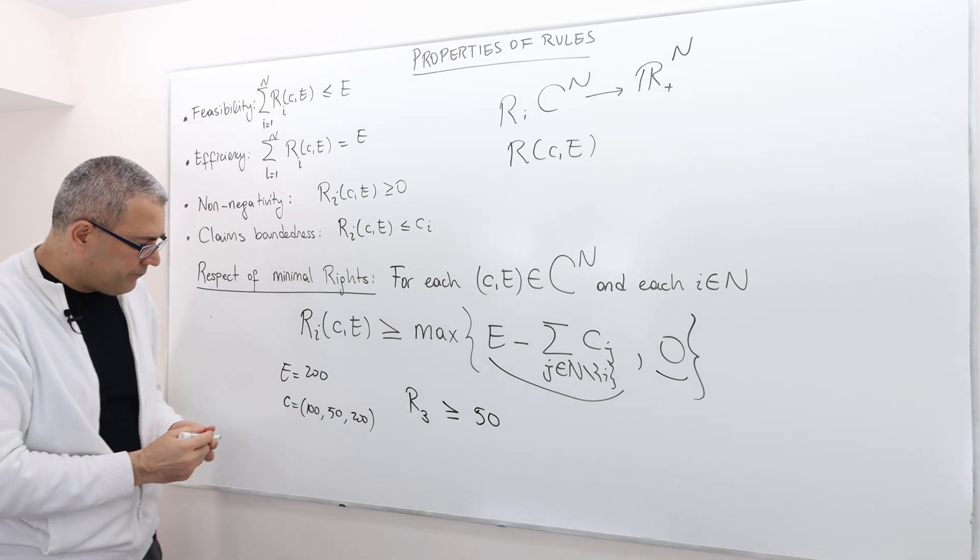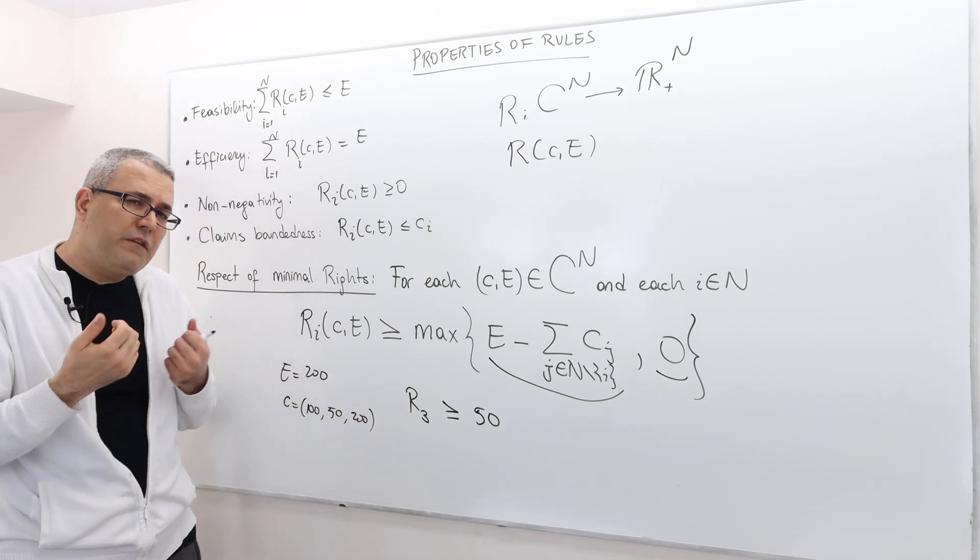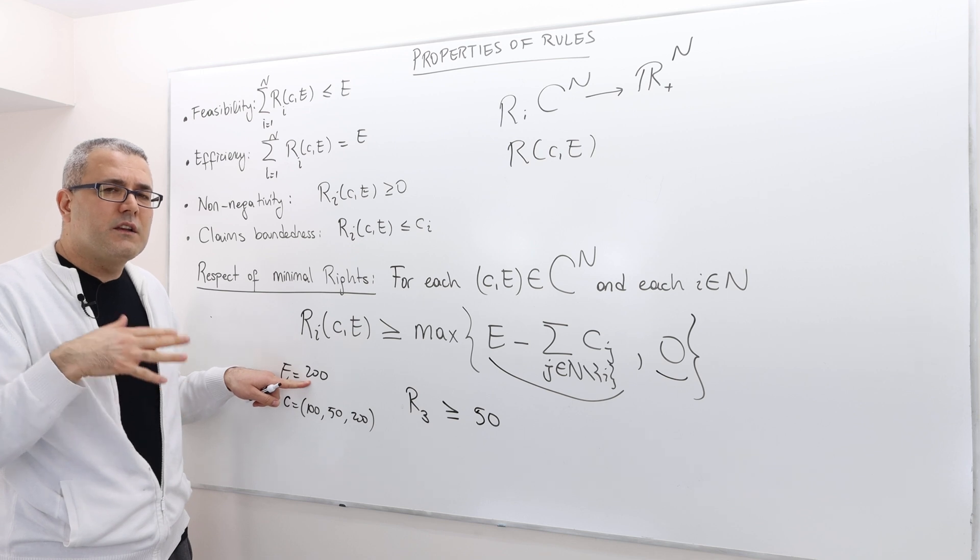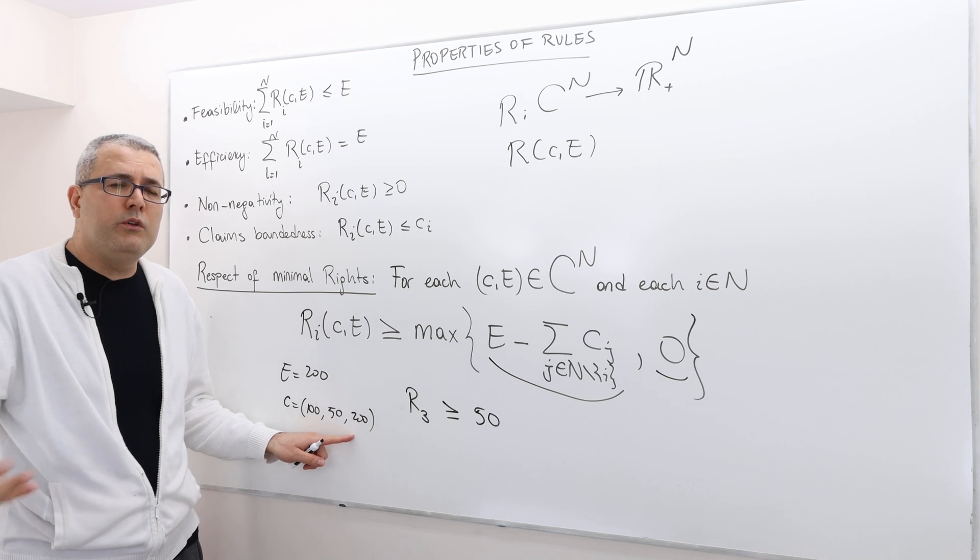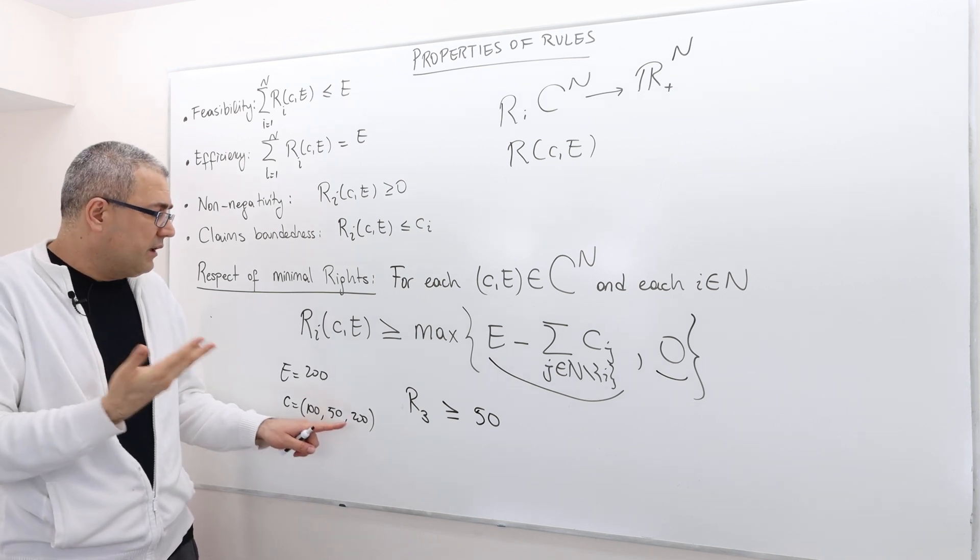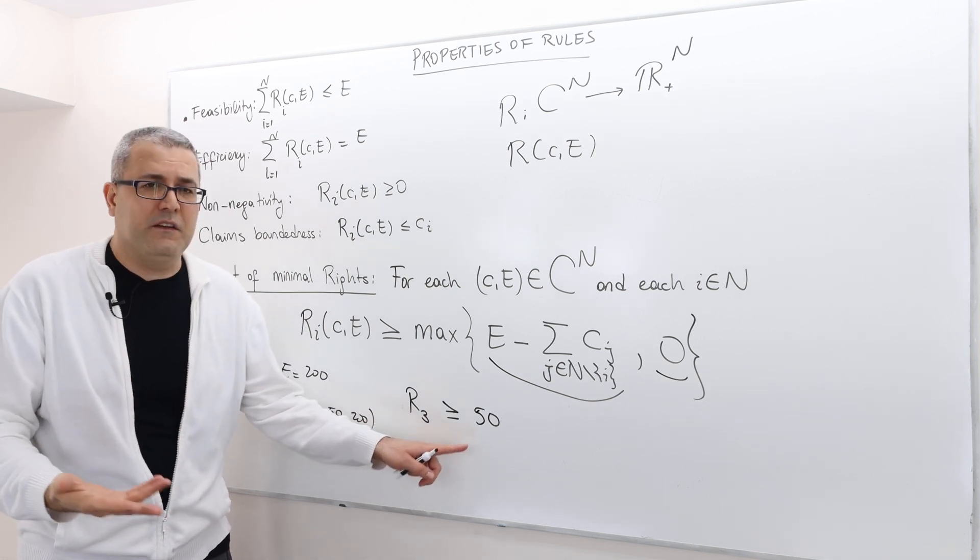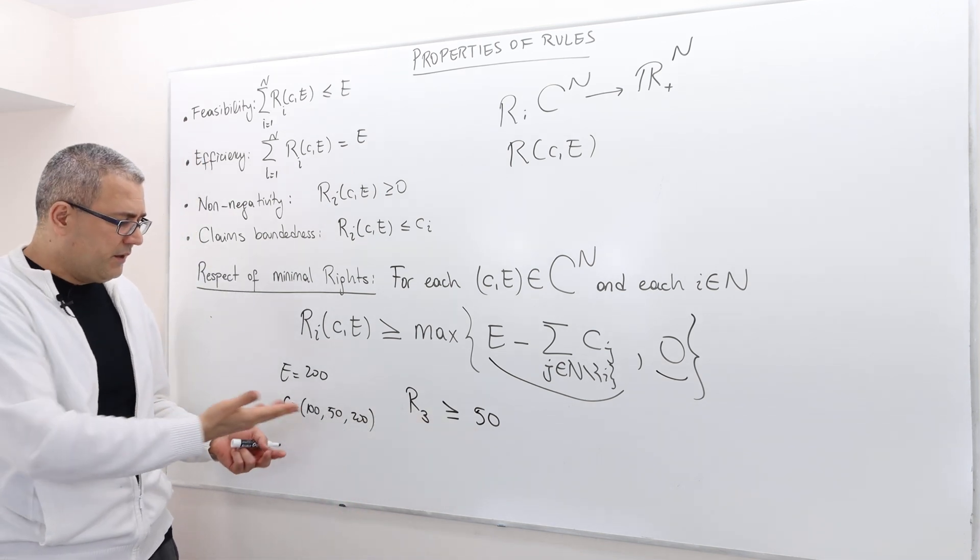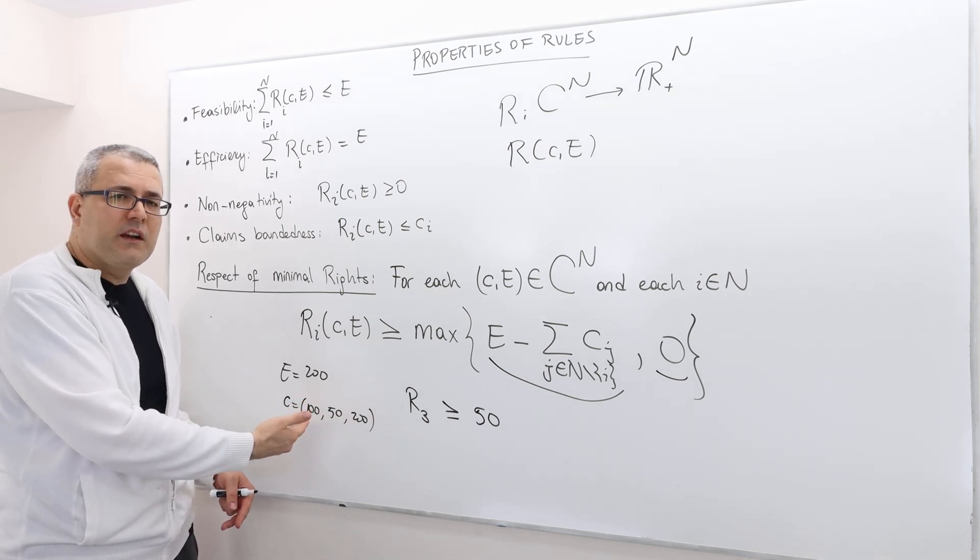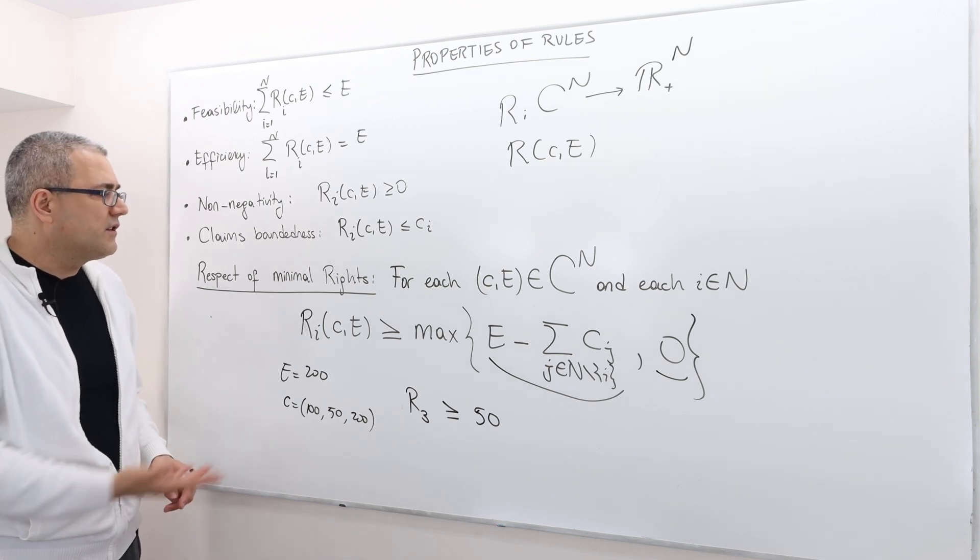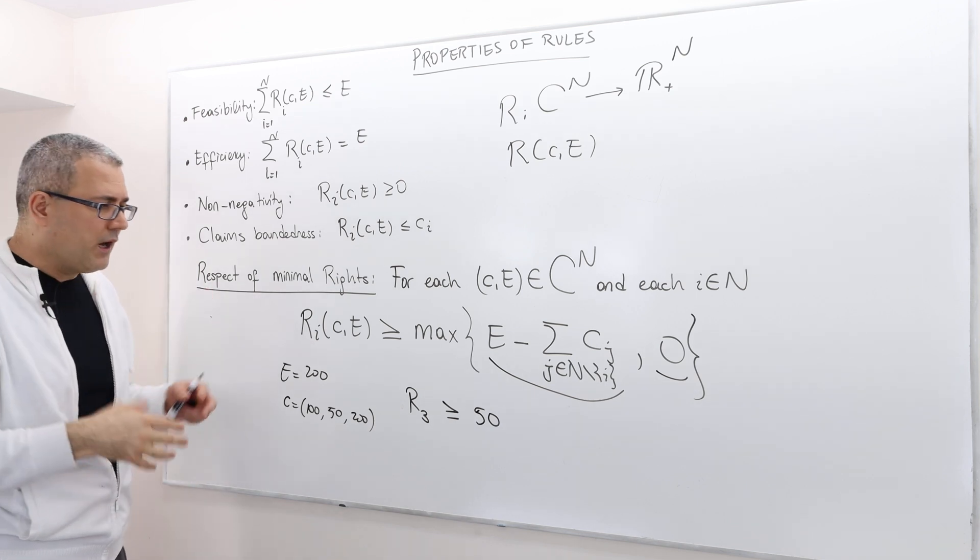So basically, remember, what's the idea? The first guy and the second guy claim $150 of this money. So the remaining $50 is unclaimed. So therefore, whatever rule you use, well, this property says it should not give this agent less than $50. If it does, that's weird, right? I mean, because in a sense it means you are giving one of the other agents more than his claim. So it's kind of an implication of those properties. So it's not coming out of blue.